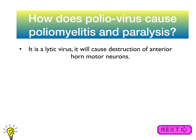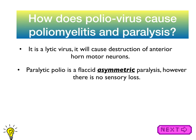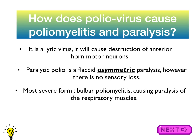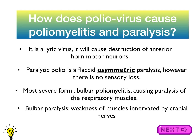How does poliovirus cause poliomyelitis and paralysis? This is a lytic virus — it causes destruction of the anterior horn motor neurons. The key findings for board exams: paralytic polio is a flaccid, asymmetric paralysis with no sensory loss. In the most severe form it can cause bulbar poliomyelitis, which causes paralysis of the respiratory muscles.